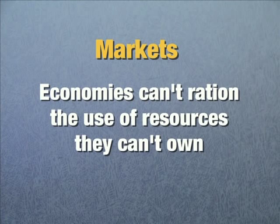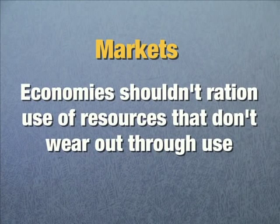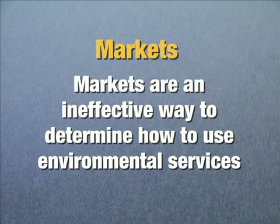It doesn't make sense to ration knowledge needed to save the planet using the price mechanism, because knowledge has the characteristic that it doesn't wear out through use — it's not scarce. Markets can't ration the use of resources they can't own, like the ozone layer itself. And they shouldn't ration use of resources that don't wear out through use. The knowledge of how to create ozone-safe compounds never wears out, yet the price mechanism perversely restricts access to it and we end up destroying the ozone layer. The same would be true if we rationed new carbon-free energy technologies or any environmentally friendly technology. Most ecosystem services you can't privately own, and most don't wear out through use, so markets are an ineffective way of deciding how to use environmental services.